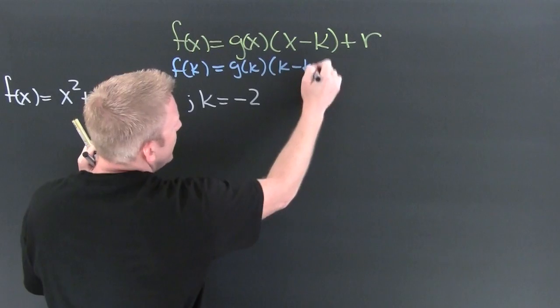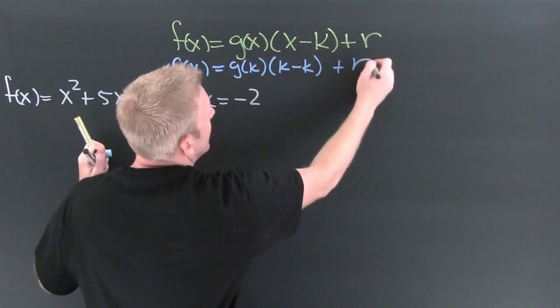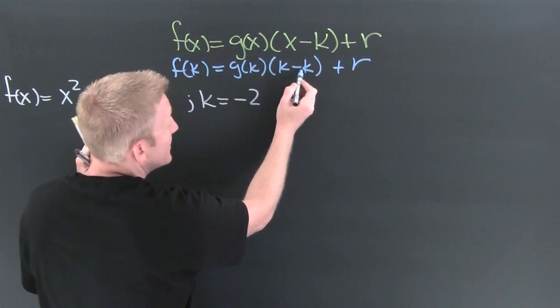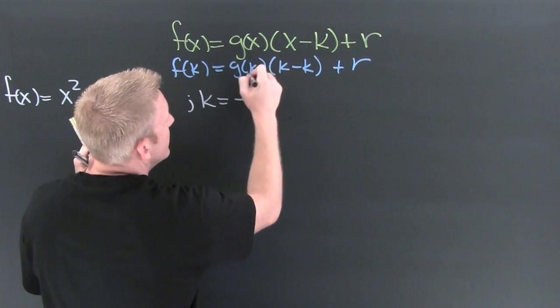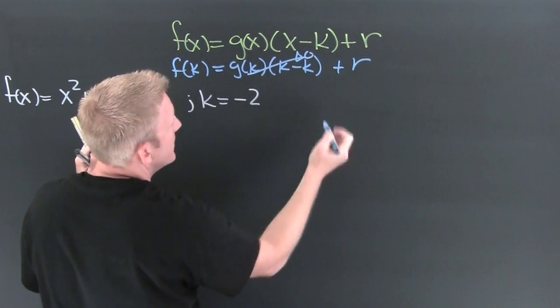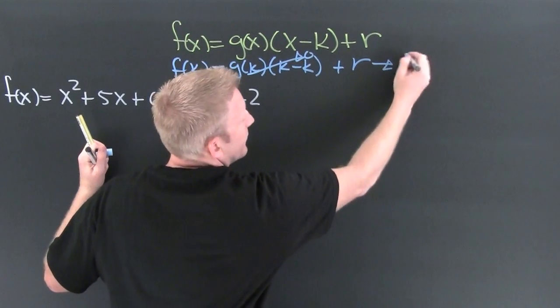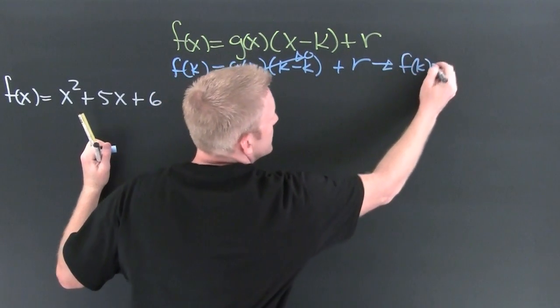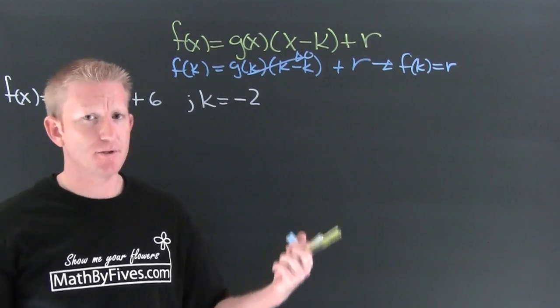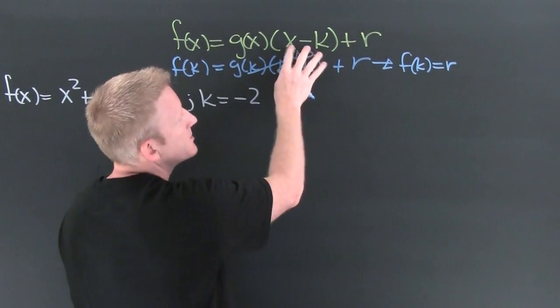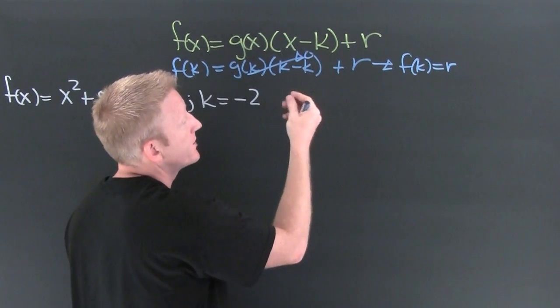What's k minus k? Zero. What's zero times that function? Zero. So that whole thing goes to zero, and what are you left with? You're left with f(k) is equal to r. This only happens when you're dividing by that special linear factor.